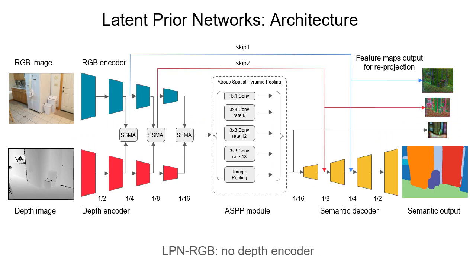For an individual frame, LPN takes in RGBD as input and outputs the semantic labels as well as intermediate feature maps at several strides. Features extracted from RGBD are fused at multiple resolutions with SSMA. The ASPP module is applied at the bottleneck, followed by a lightweight decoder that predicts the final output. Note that we also propose an RGB-only variant where only RGB encoder is used for feature extraction.